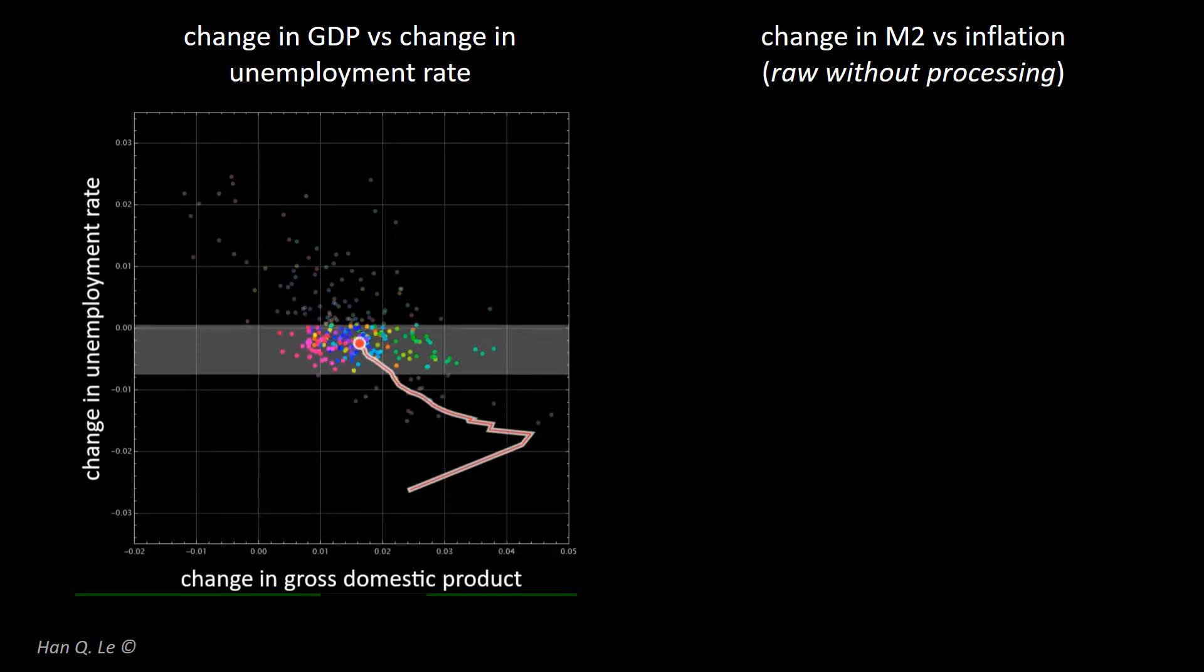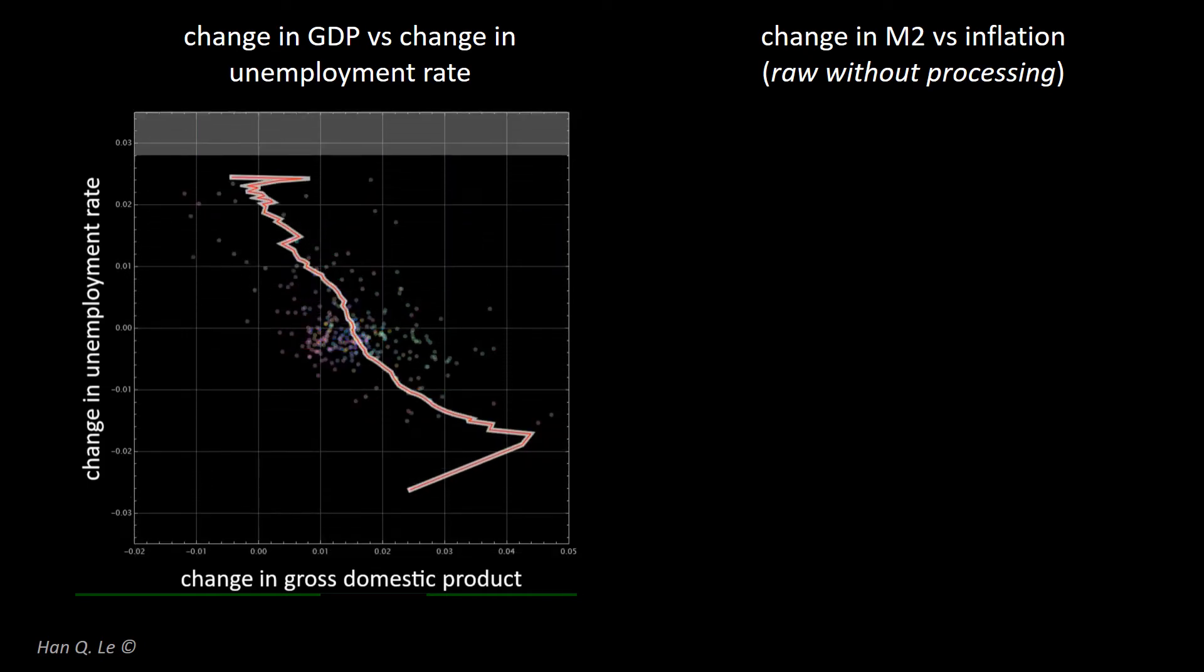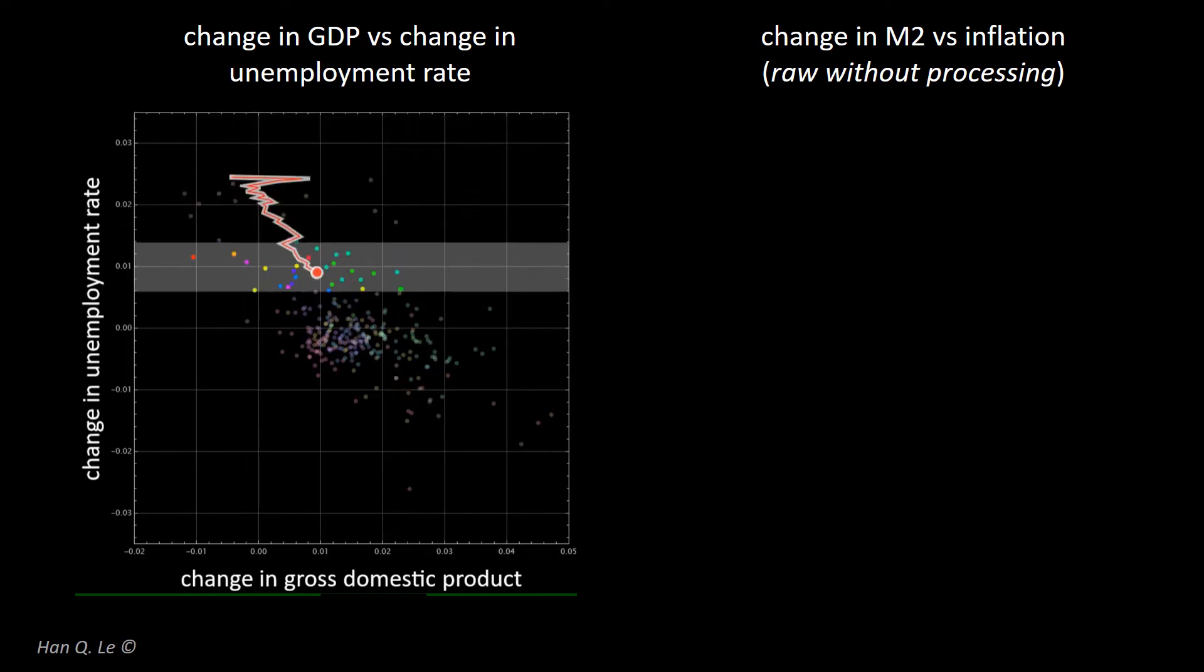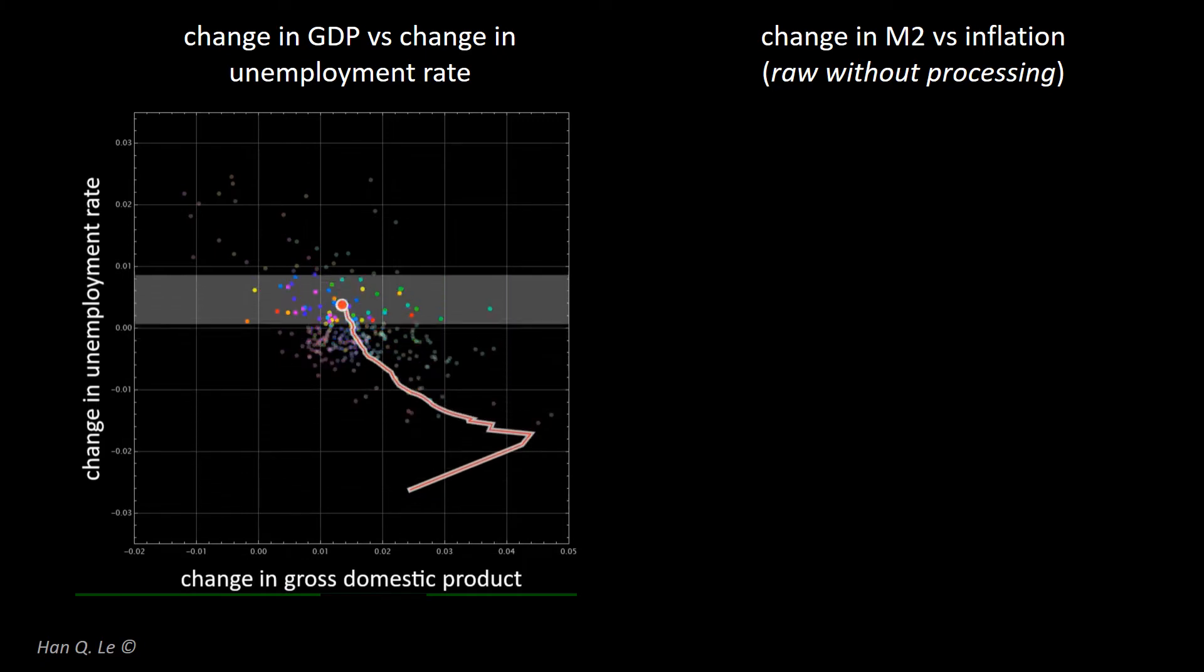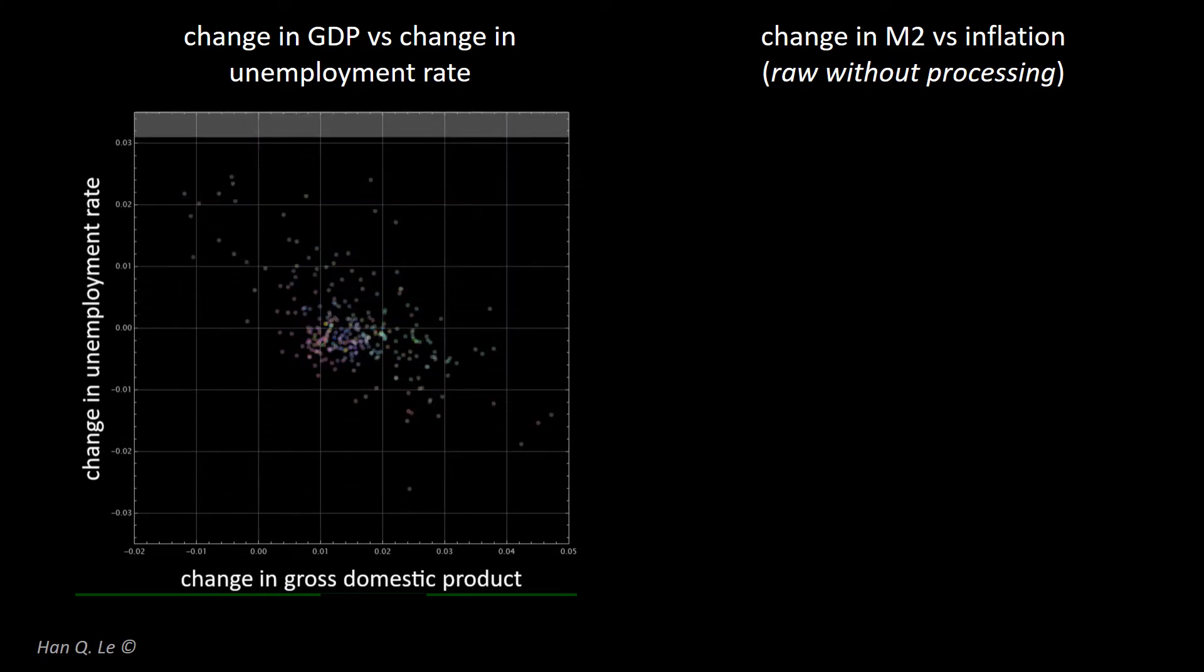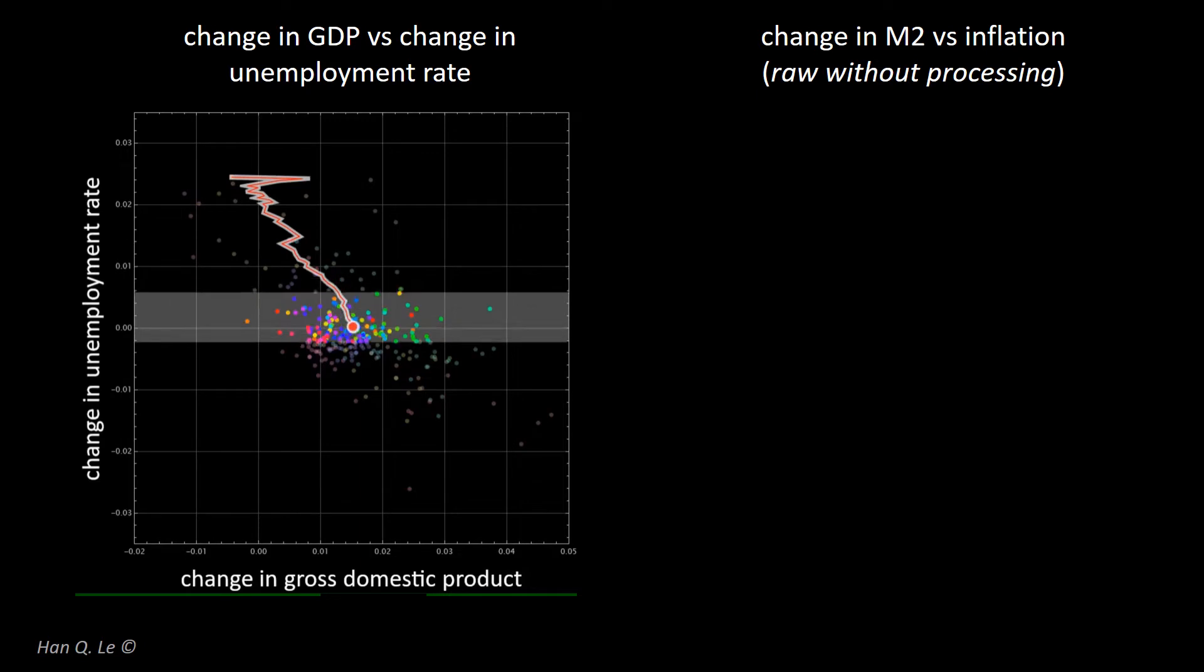The same thing can be done with a horizontal slice. Again, there is a rough path that shows the correlation of x and y variables. Later, it will be shown that linear regression can be used to estimate a straight line that correlates the two variables.